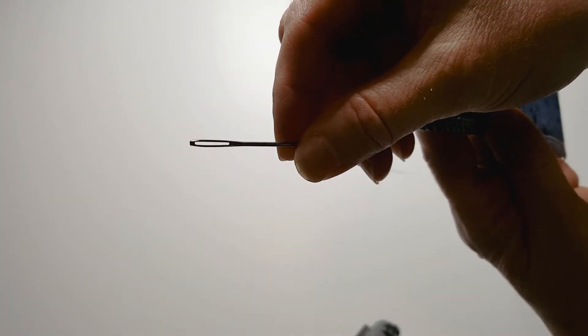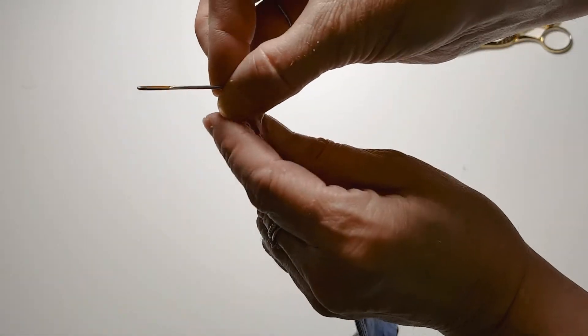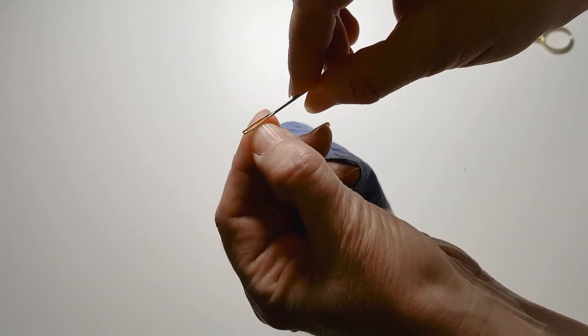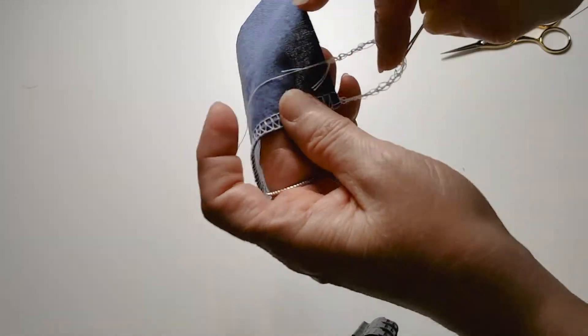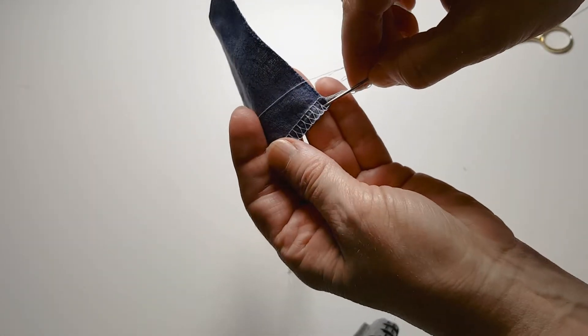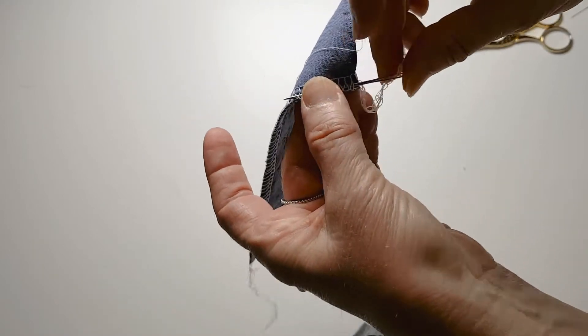To weave, I'm using a crewel needle which has a large hole, making it easier to thread the serger threads through the needle. Then you simply take those threads and run the needle underneath the back side of the serging.